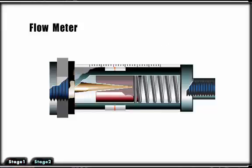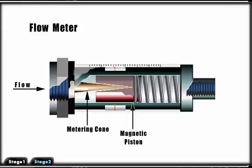Fluid first enters the device, flowing around the metering cone, putting pressure on the magnetic piston and spring.